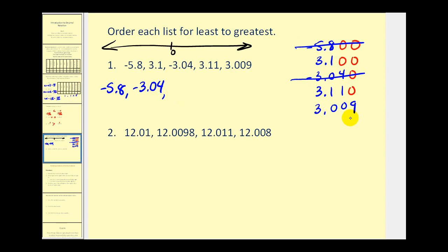Now, because they have the same number of digits, now if we compare the tenths place value, these both have one tenth, but this has zero tenths. Therefore, this would be the next number in the list. We have two numbers left, and we have to determine which one would be smaller. If we look at the hundredths place value, this has zero hundredths, this has one. So 3.1 is smaller than 3.11.